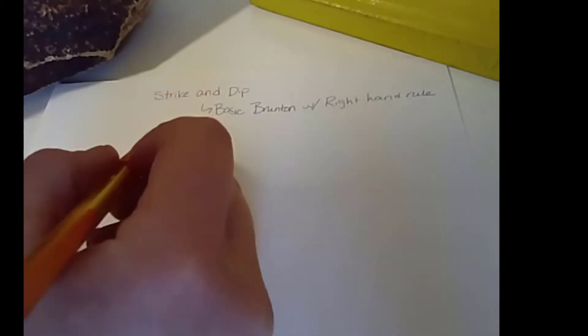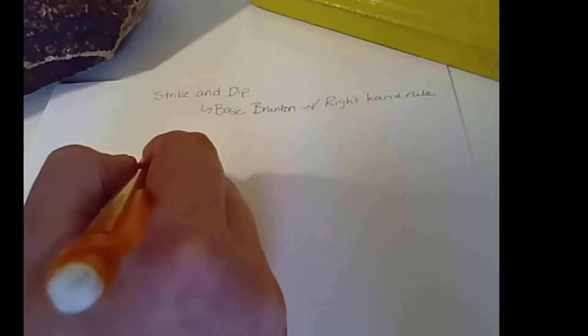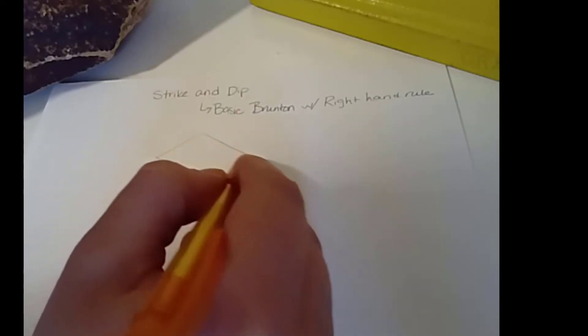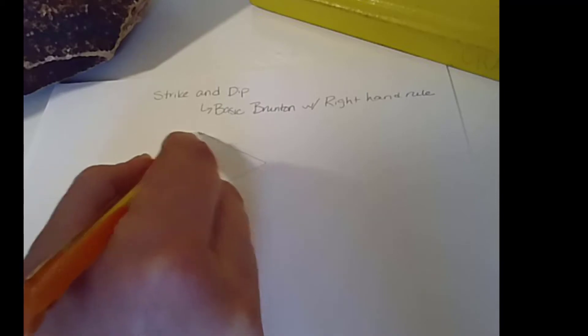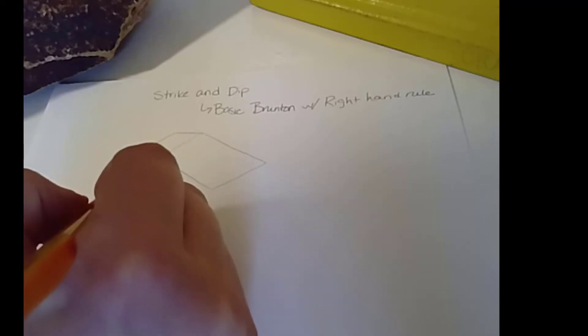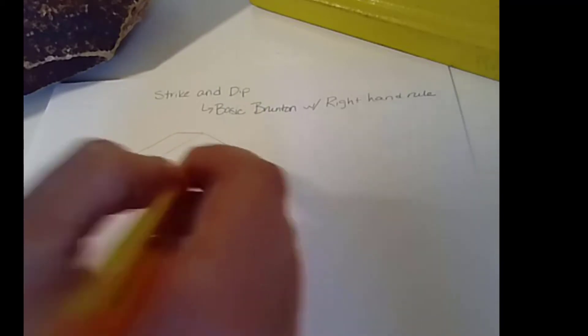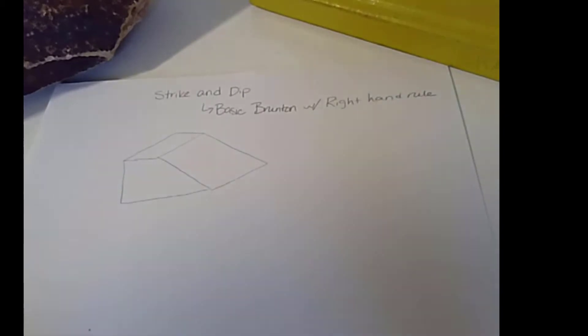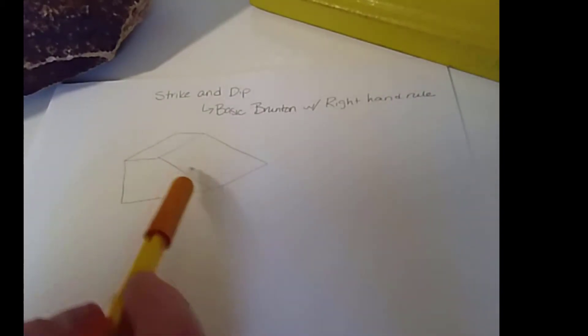So, the purpose of a Brunton in terms of strike and dip is what we're trying to record. Let's say that we've got a surface that we care about. We want to take an orientation on the surface of its strike and dip.